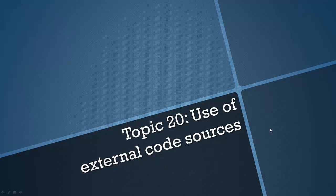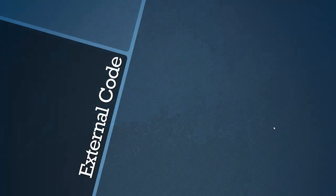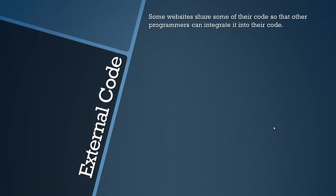Hello everyone and welcome to what is a very short video covering the 20th topic in the AQA GCSE Computer Science course. We're looking at external code sources and their uses. We've only got one slide for you today and unfortunately the specification is very unspecific, which isn't very specification-like in this area, so I'm using my common sense here.